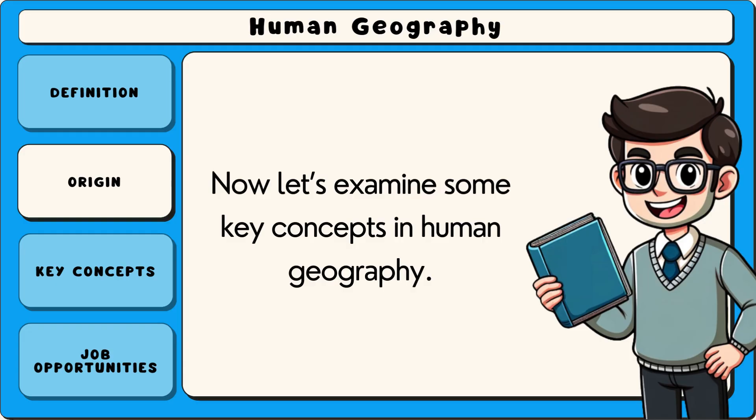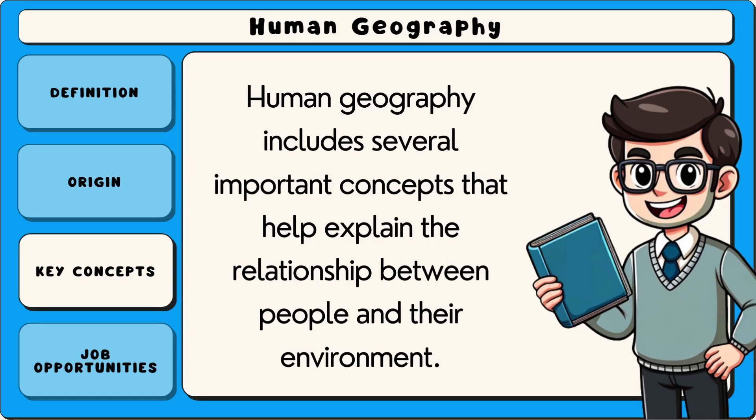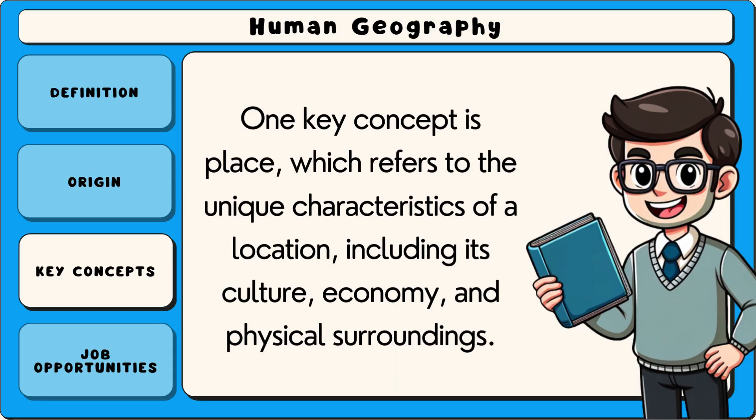Now let's examine some key concepts in human geography. Human geography includes several important concepts that help explain the relationship between people and their environment. One key concept is place, which refers to the unique characteristics of a location, including its culture, economy and physical surroundings.